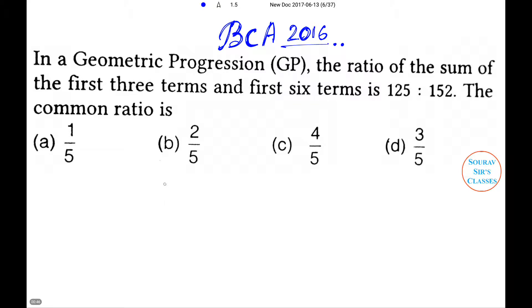Now solution: a plus ar plus ar squared divided by a plus ar plus ar squared plus ar cubed plus ar to the power 4 plus ar to the power 5, that equals 125 divided by 152.